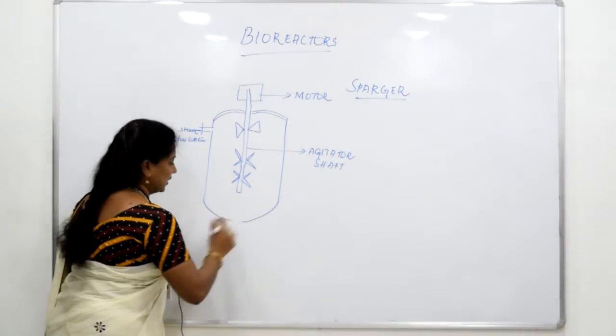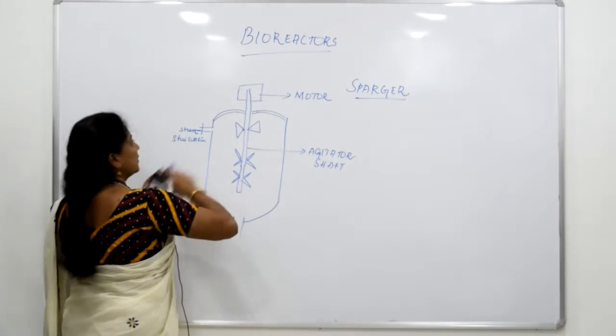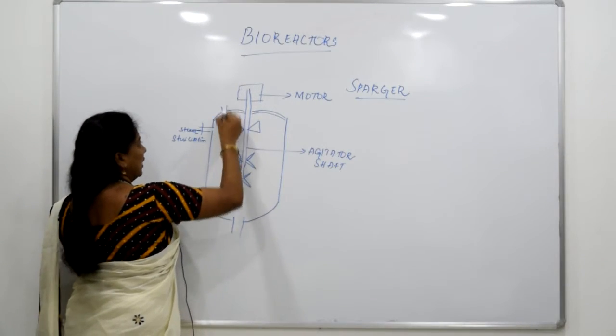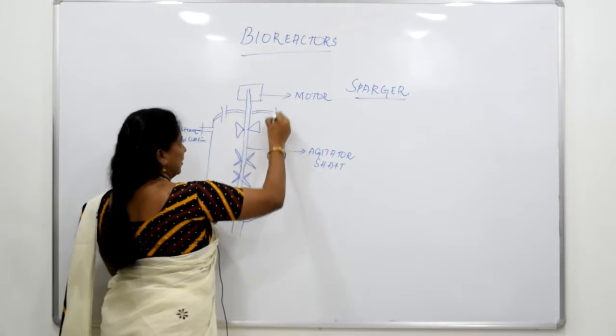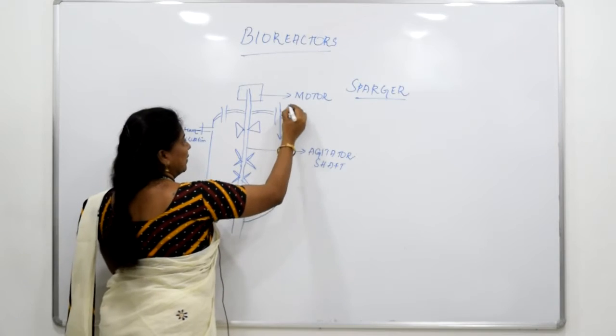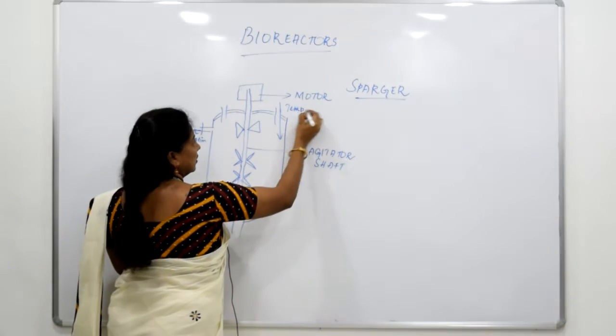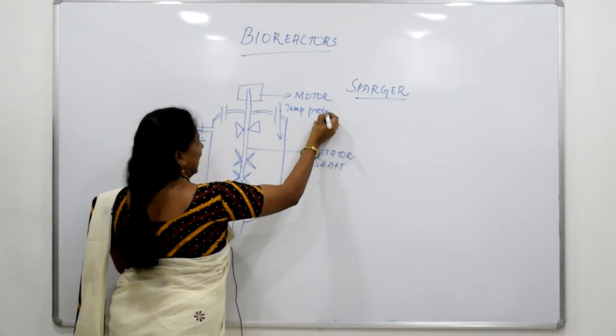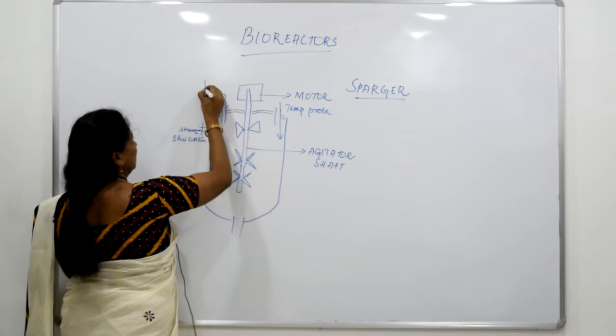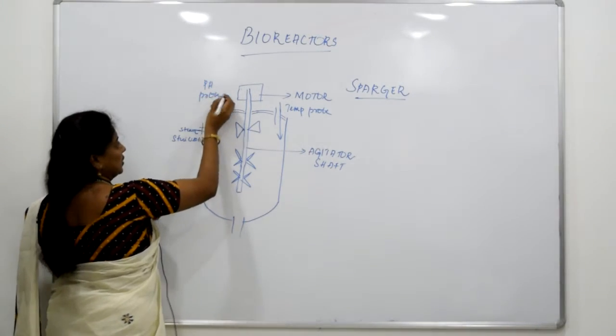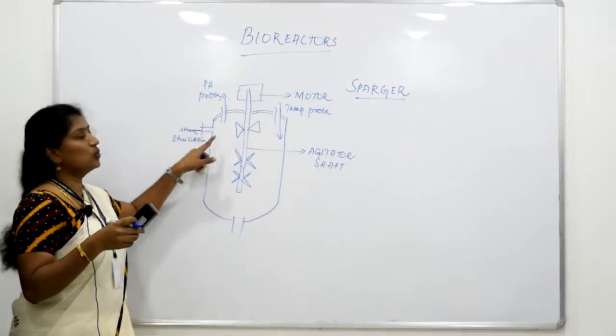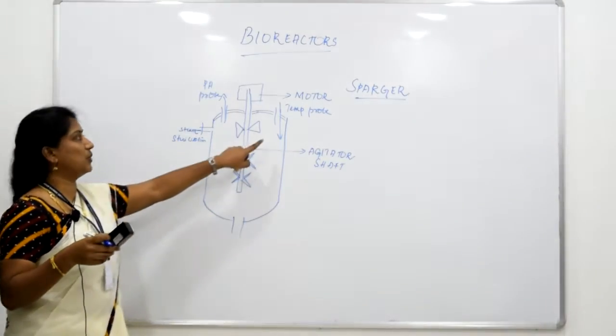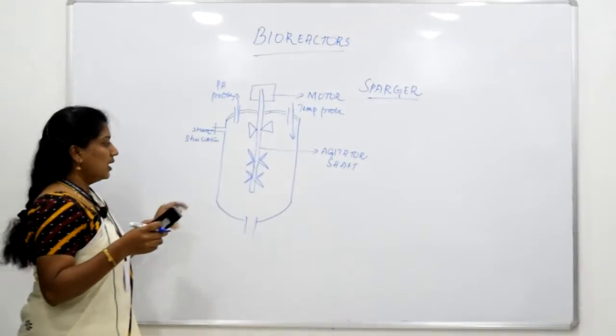Then there is a port here and there is a port which is here on top and you have a port here as well. This is for the temperature probe and this is for the pH probe. If you have changes in temperature or changes in pH, you will be optimizing through this temperature probe or the pH probe.